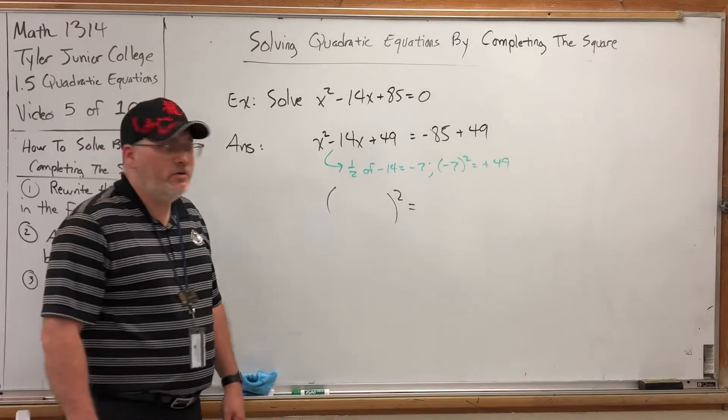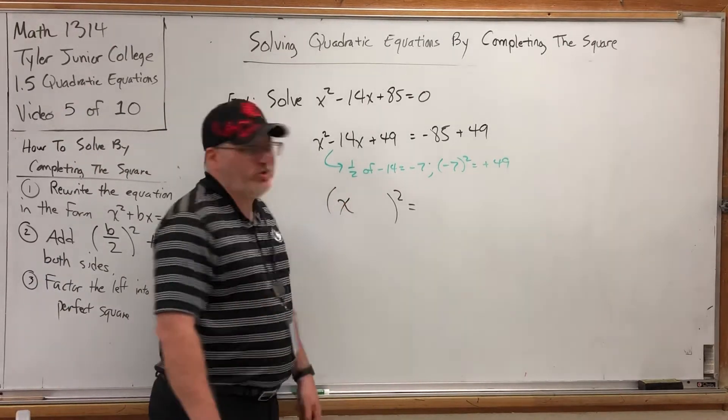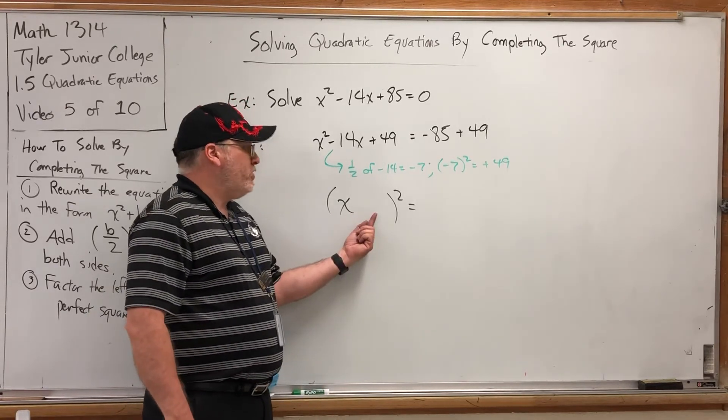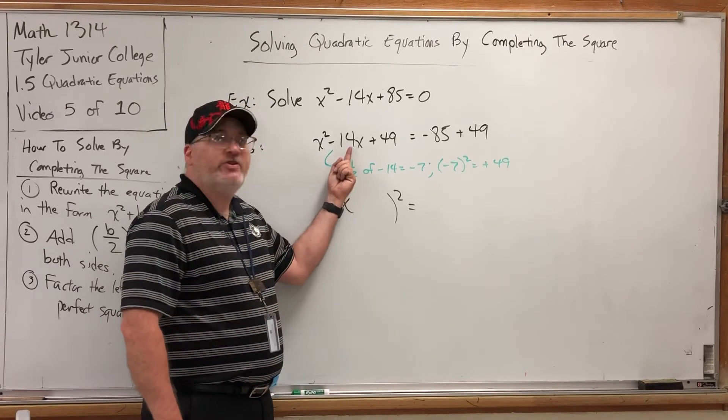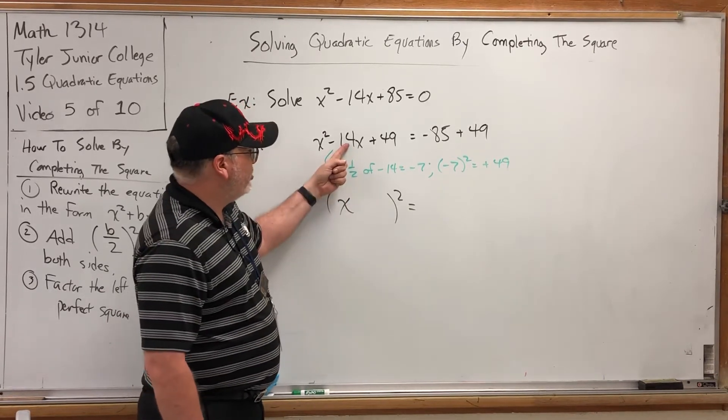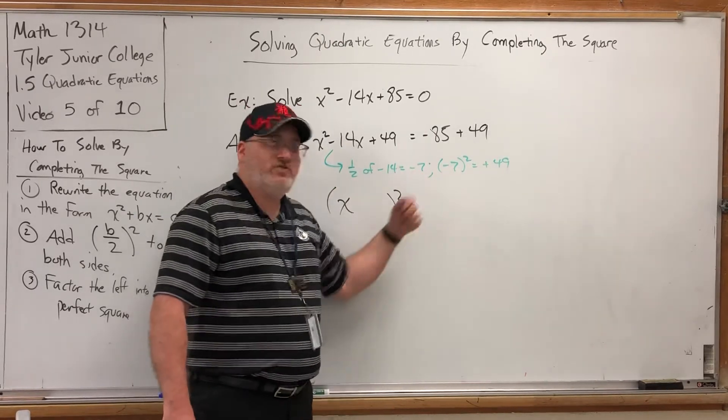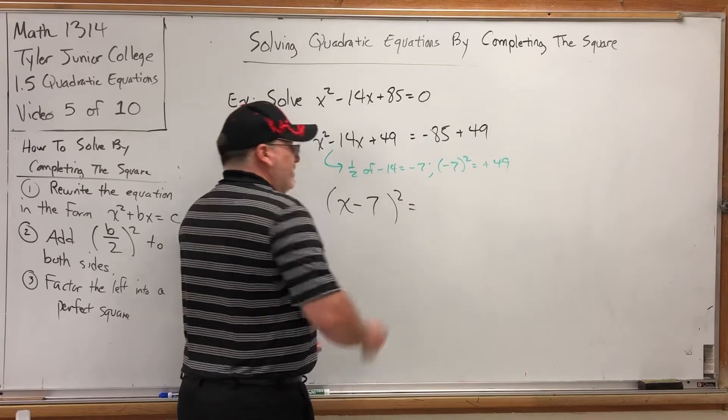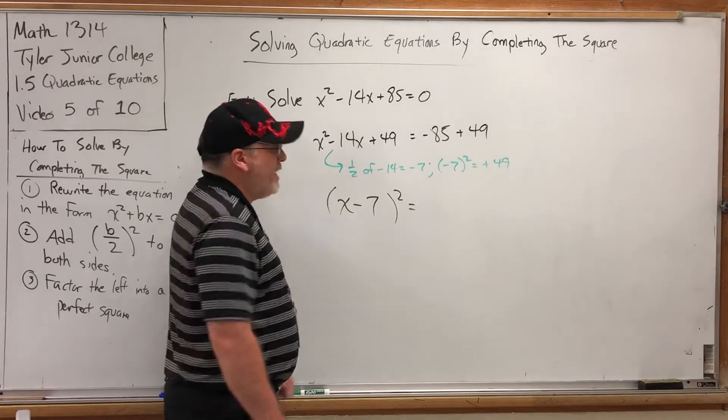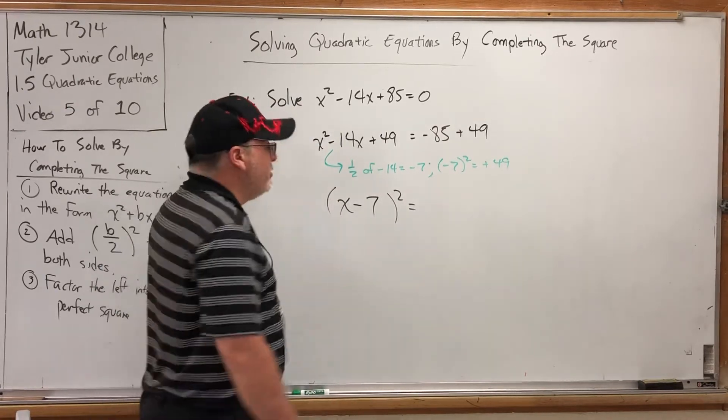That something will be the x plus or minus the number. What number goes here? Whatever you got when you first took half of this. In other words, it's what I call the transition number. It's the number in transition between negative 14 and positive 49, the negative 7. So, you don't have to guess what goes there. Just say, what was half of this? Oh, negative 7. Now, of course, you've got to combine these guys. If I did it correctly, and I believe I did, you get negative 36.